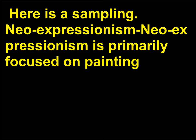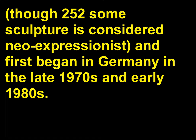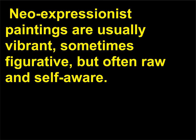Neo-Expressionism is primarily focused on painting, though some sculpture is considered neo-expressionist, and it first began in Germany in the late 1970s and early 1980s. Neo-Expressionist paintings are usually vibrant, sometimes figurative, but often raw and self-aware.